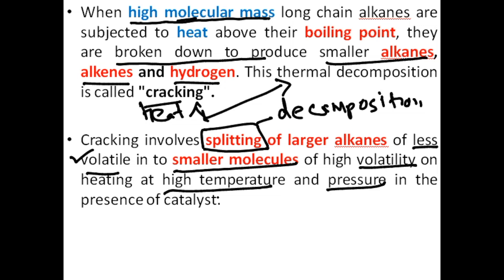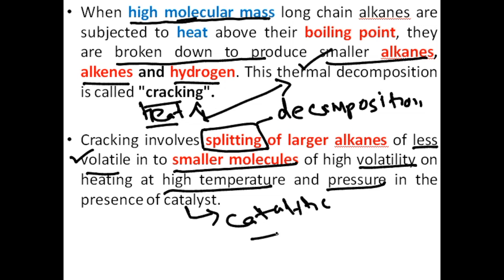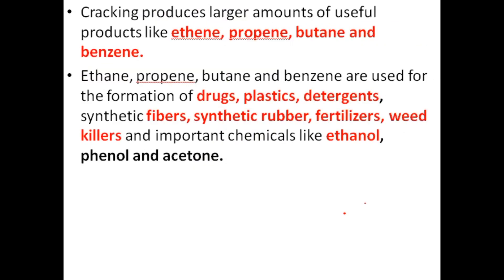And if in any cracking process we have used a catalyst, such type of cracking is known as catalytic cracking — because we have used a catalyst. So remember that there are two main types of cracking: if you use heat, that is called thermal cracking, and if you use a catalyst for the breakdown of heavy molecules, that is called catalytic cracking.